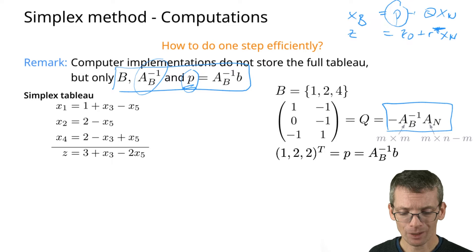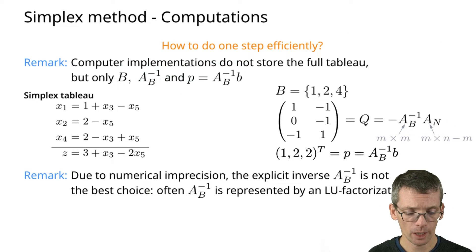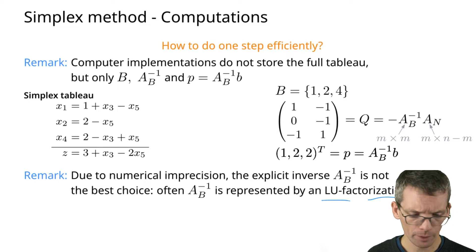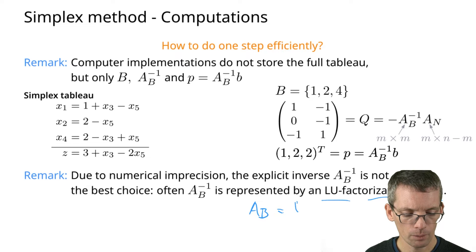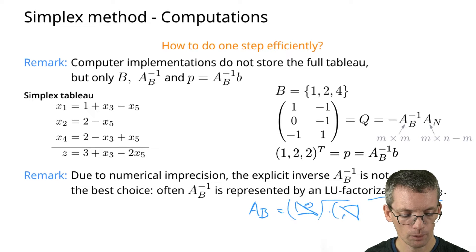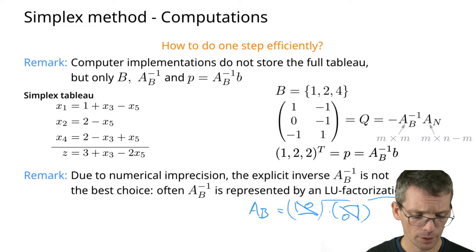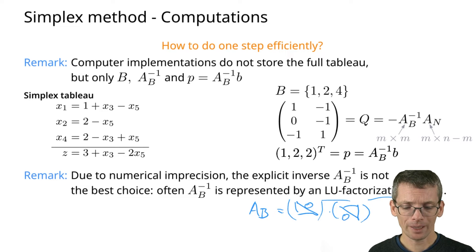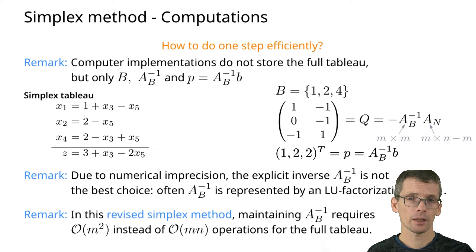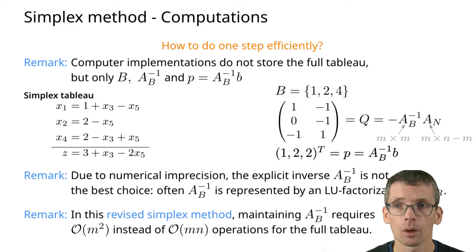We wouldn't actually want to take the inverse because that's numerically unstable. Instead we maintain the so-called LU factorization of AB. We can write the matrix AB — which is non-singular — in LU form where L stands for lower triangular (zeros above the diagonal) and U for upper triangular (zeros below the diagonal). This allows us to do the computations in O(m²) space instead of O(m·n) required for the whole tableau.